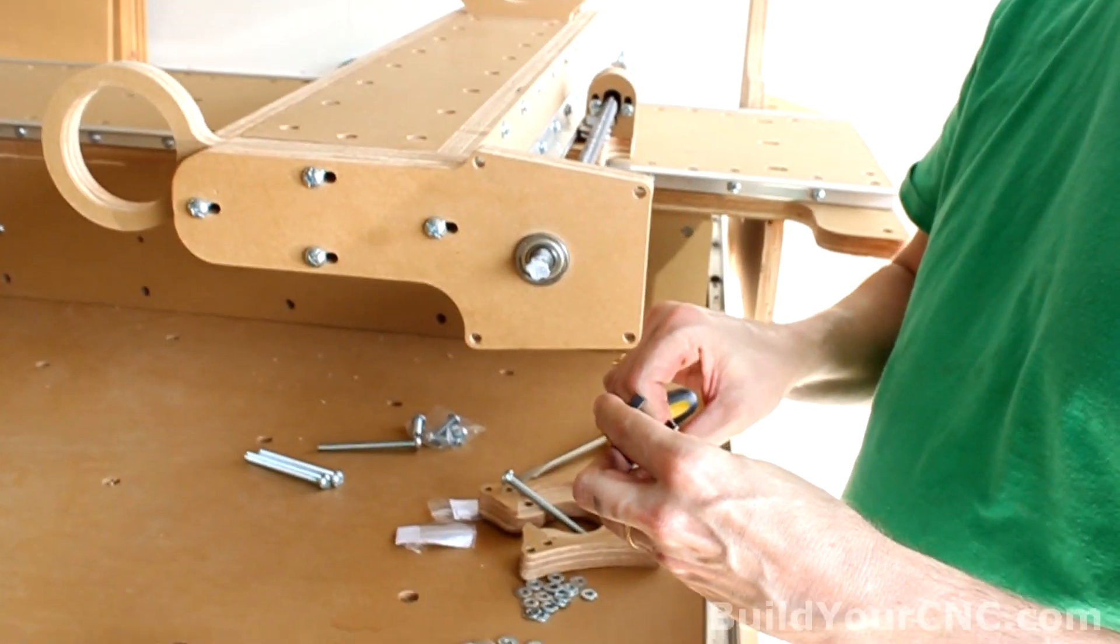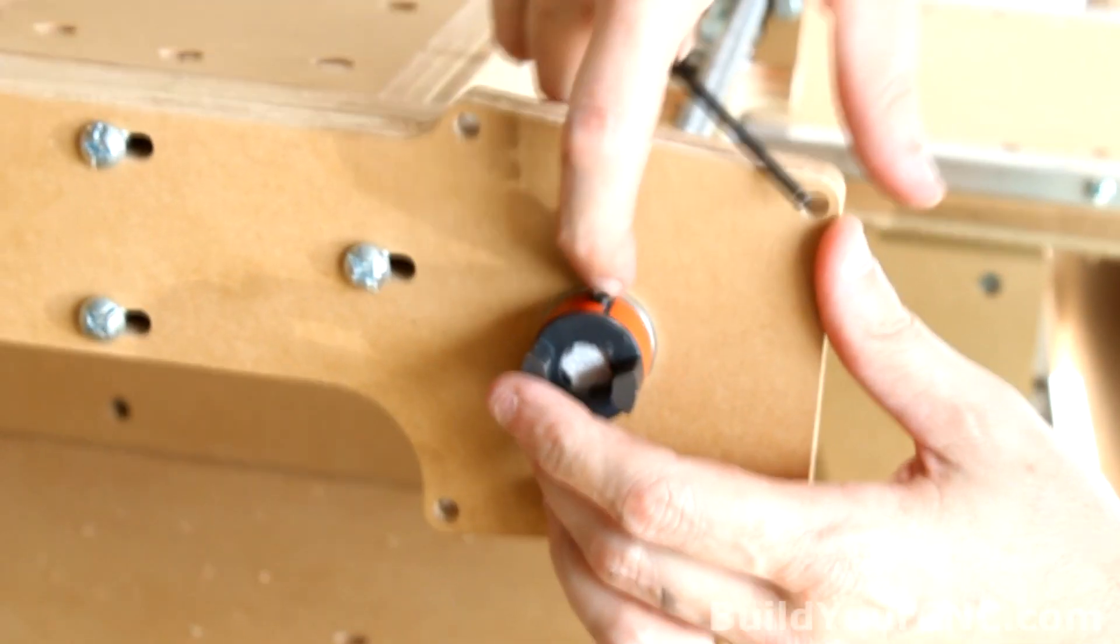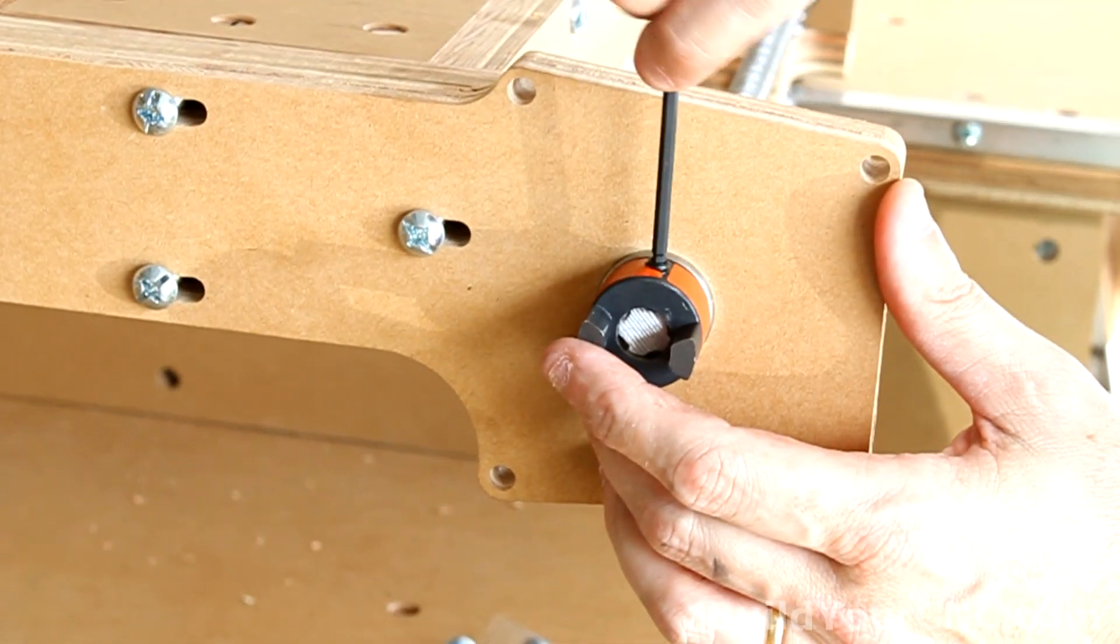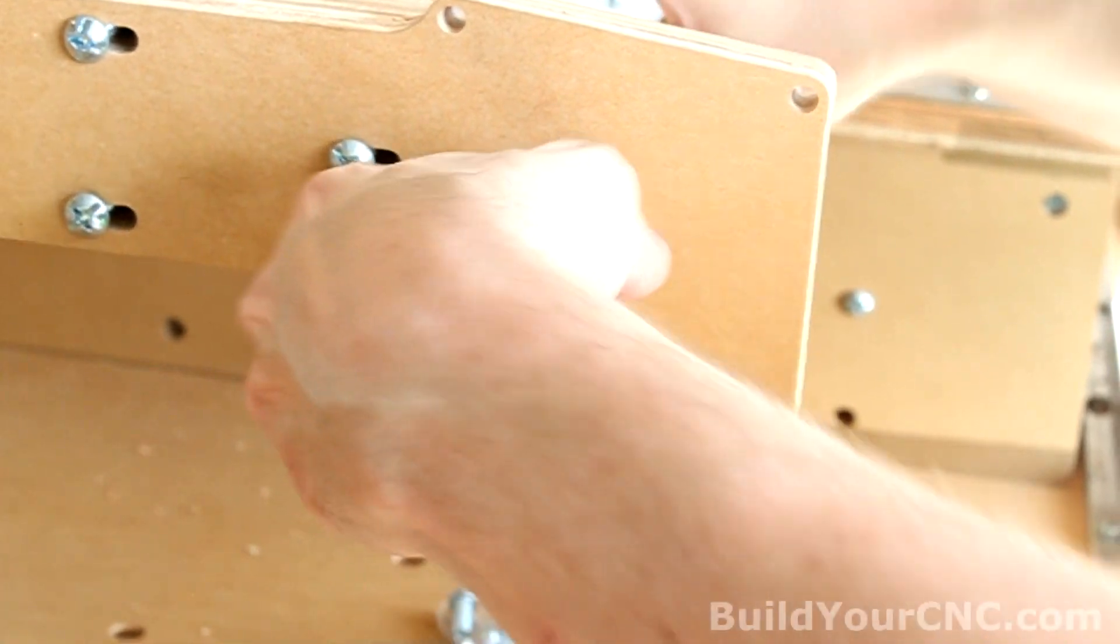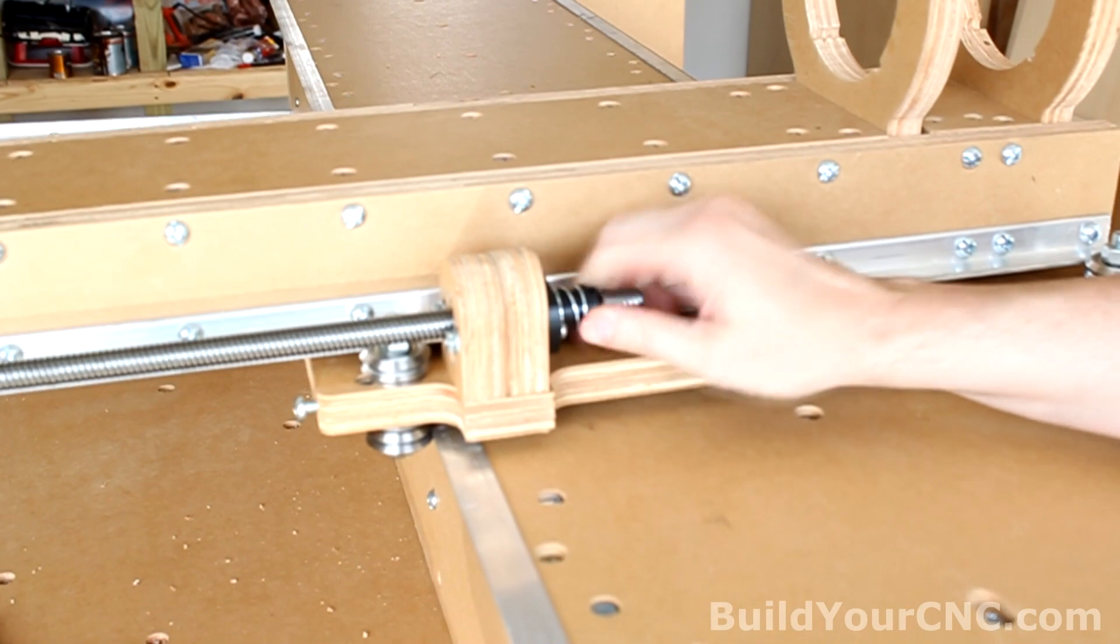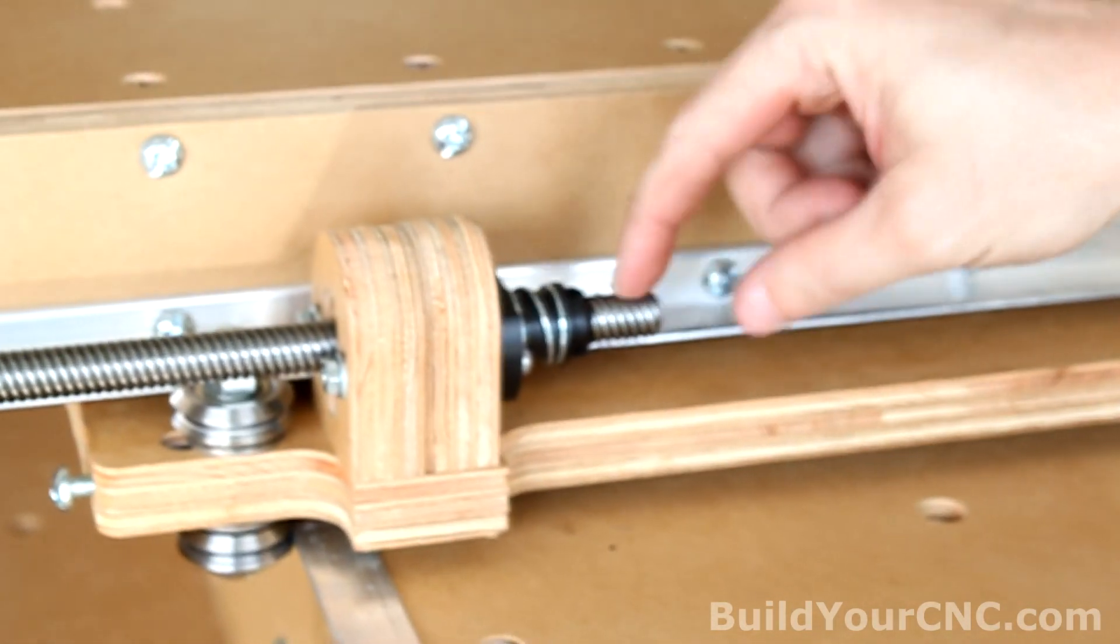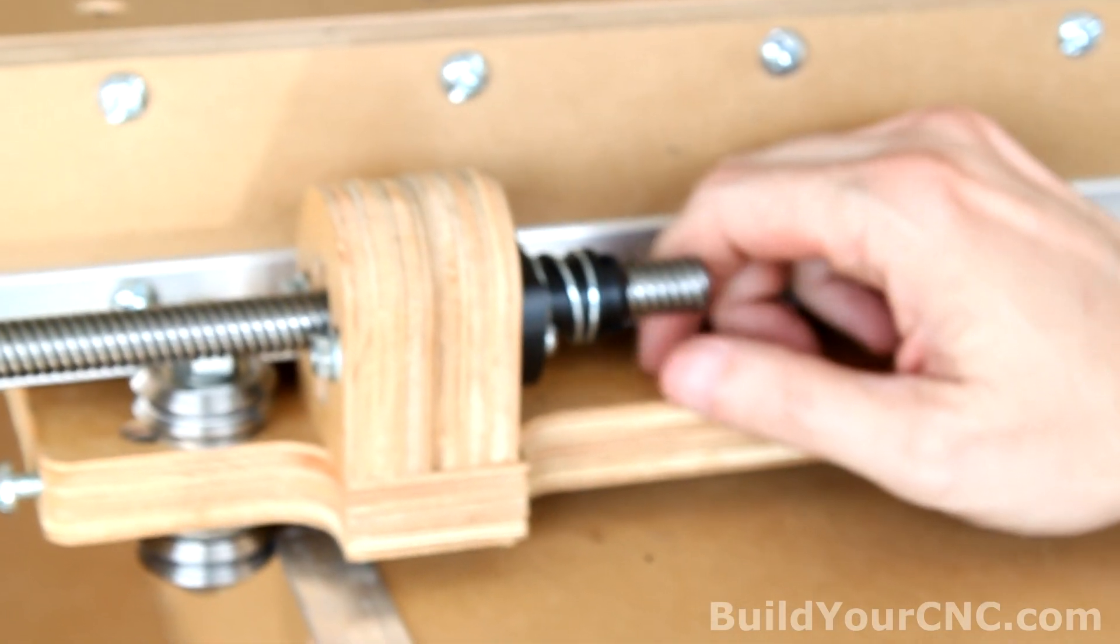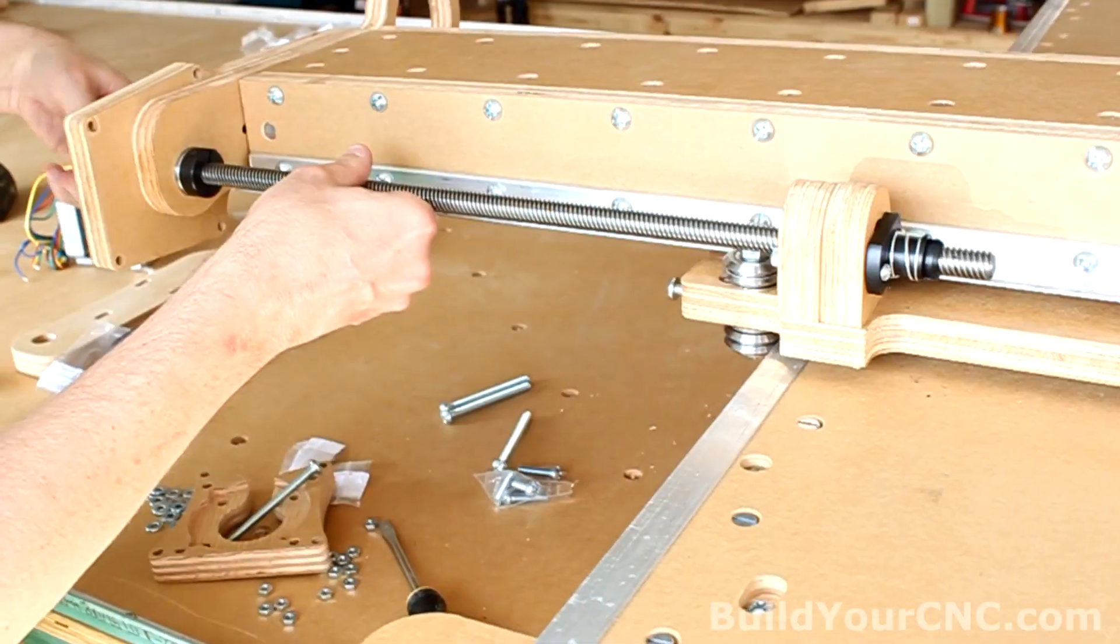Now we can put the coupling hub on the lead screw. You want to make sure it doesn't protrude past this point, because this is also used to secure the bearing. You want to get it pretty tight, and you can also use this to help it go into the lead nut. You'll also want to make sure that this sleeve is over this section of the anti-backlash nut, or you'll have a hard time getting the lead screw in. Make sure it's shoved as far back as possible.